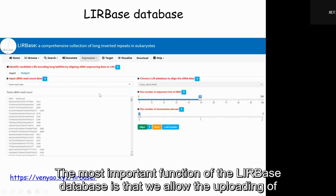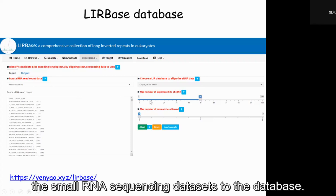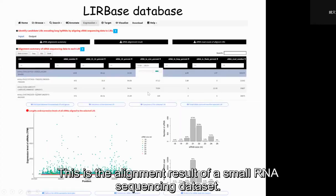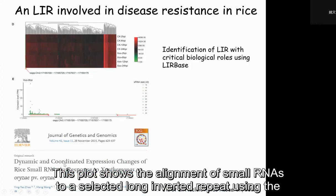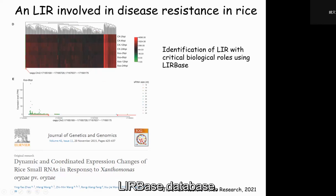The most important function of the non-invalid repeat database is that we allow the uploading of sRNA sequencing datasets to the database. This is the analytical result of an sRNA sequencing dataset. This plot shows the analysis used to select non-invalid repeats using the database.